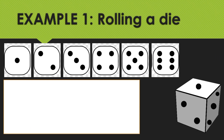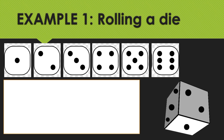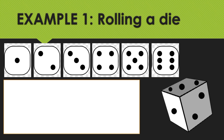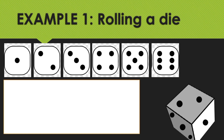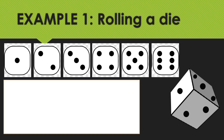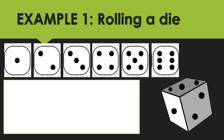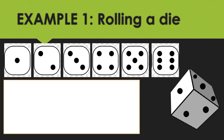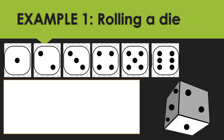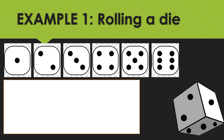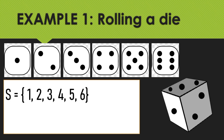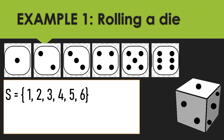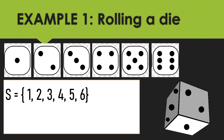Let's have example number 1: once you roll a die. We are going to identify S, the sample space, and the total possible outcomes. The sample space is the set of all possible outcomes, so S = {1, 2, 3, 4, 5, 6}, because a die has faces numbered 1 to 6.